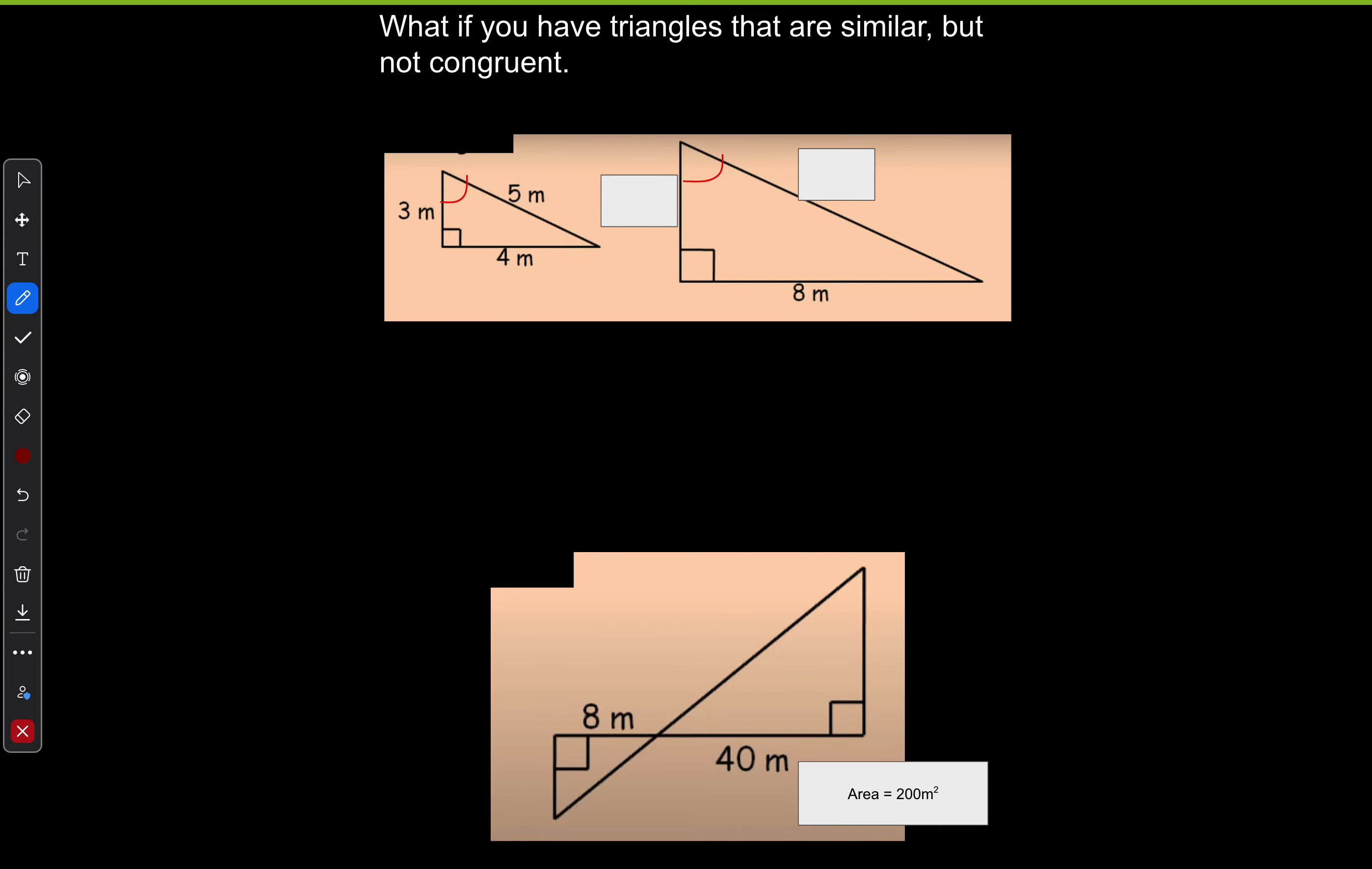So I have similar triangles, but they're not congruent. If you look at this top one, they have all the same angles, but they have different side lengths. So clearly they are similar, but they're not exactly the same.